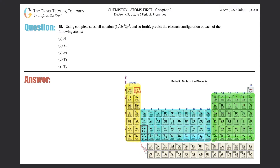Number 49: using complete subshell notation — 1s2, 2s2, 2p6, and so forth — predict the electron configuration of each of the following atoms, a through e. Stop the video if you have not already taken your periodic table and divided it into these three colored groups. I've already done it for you just to save time.